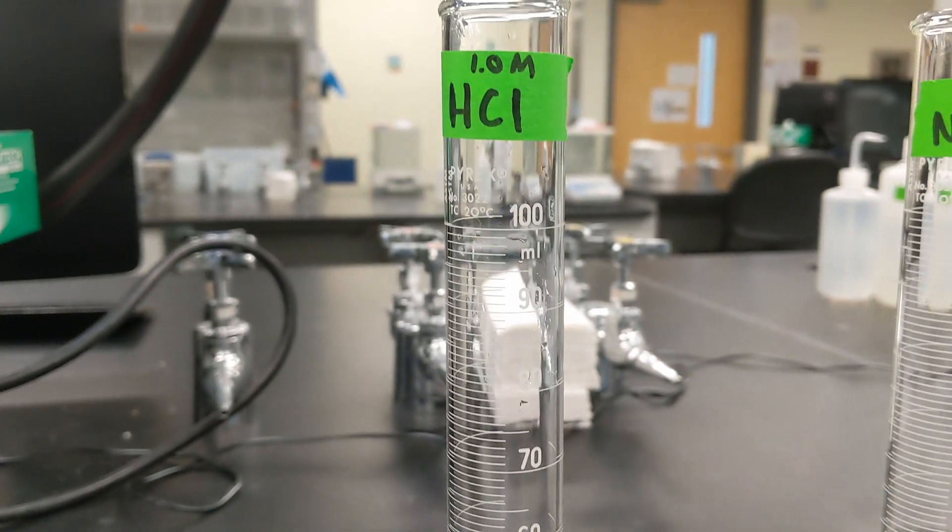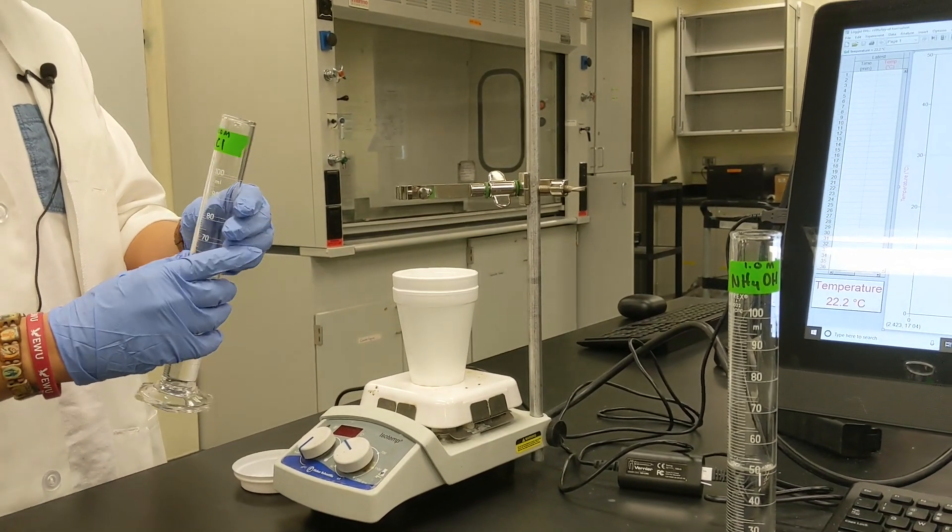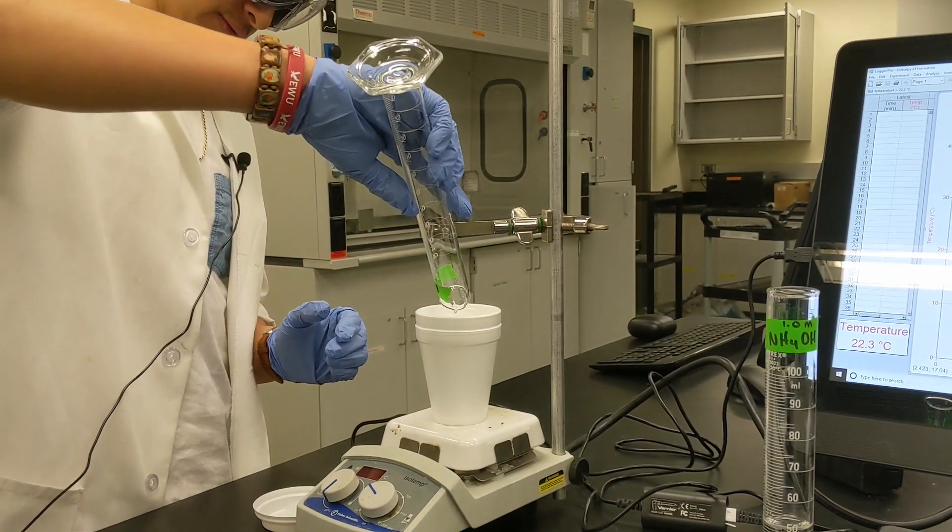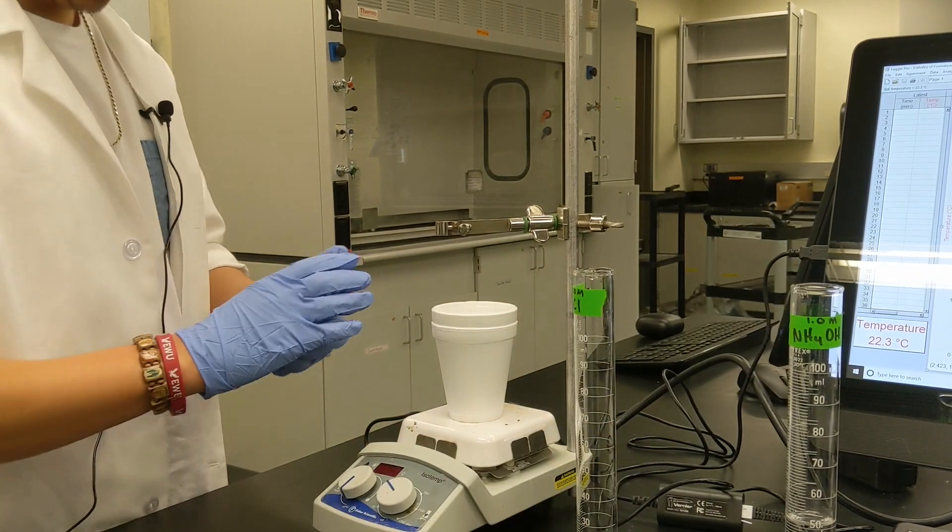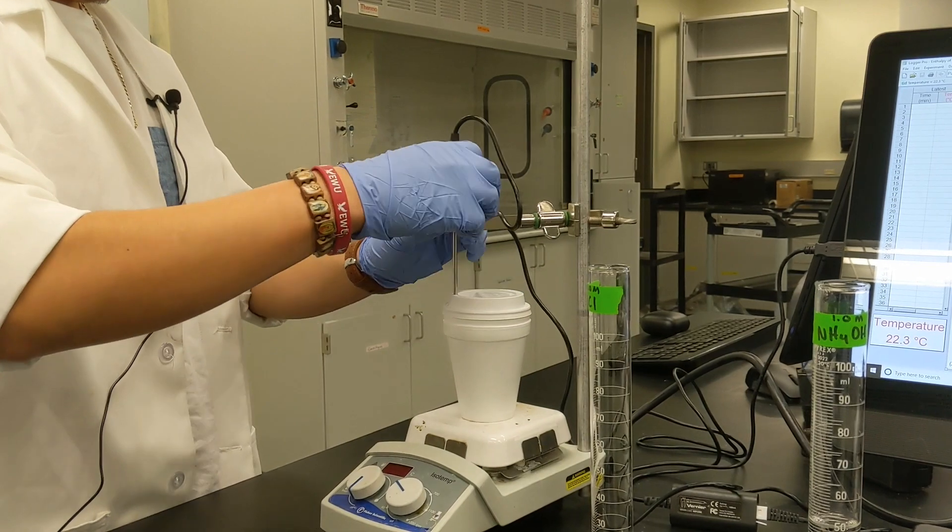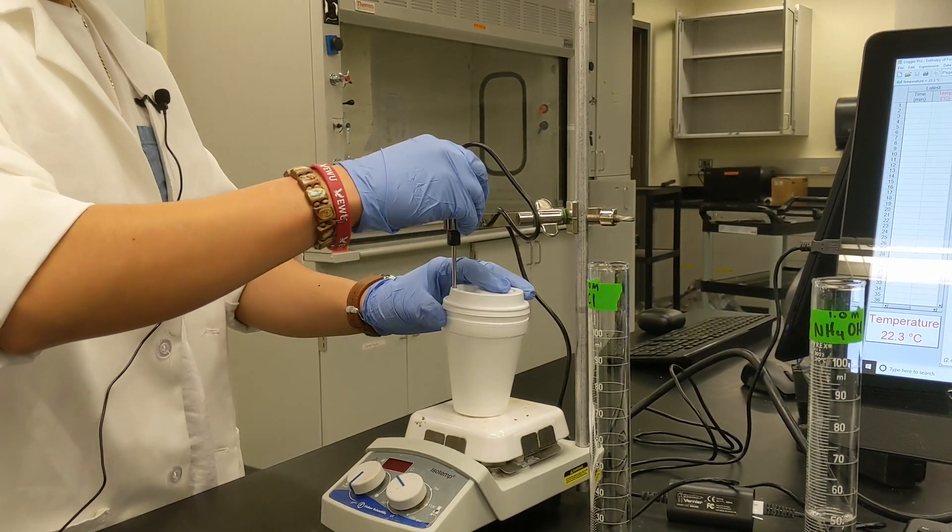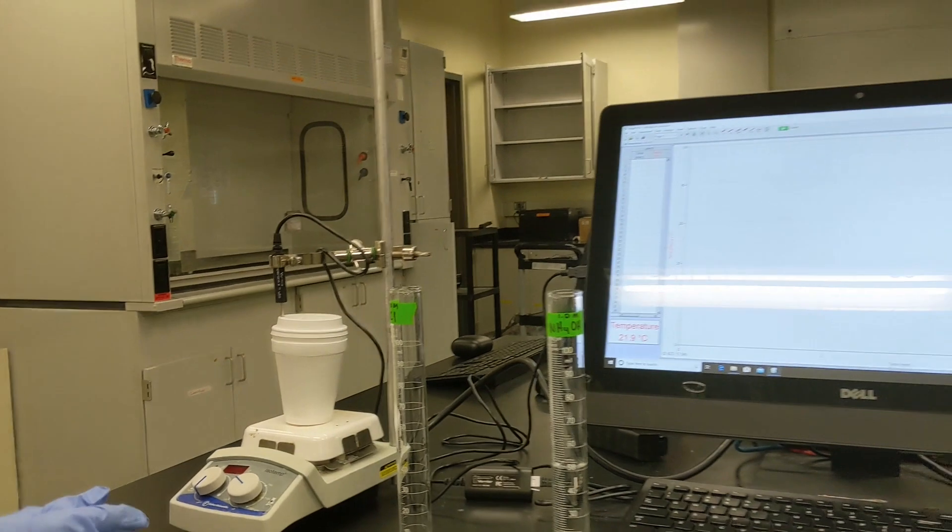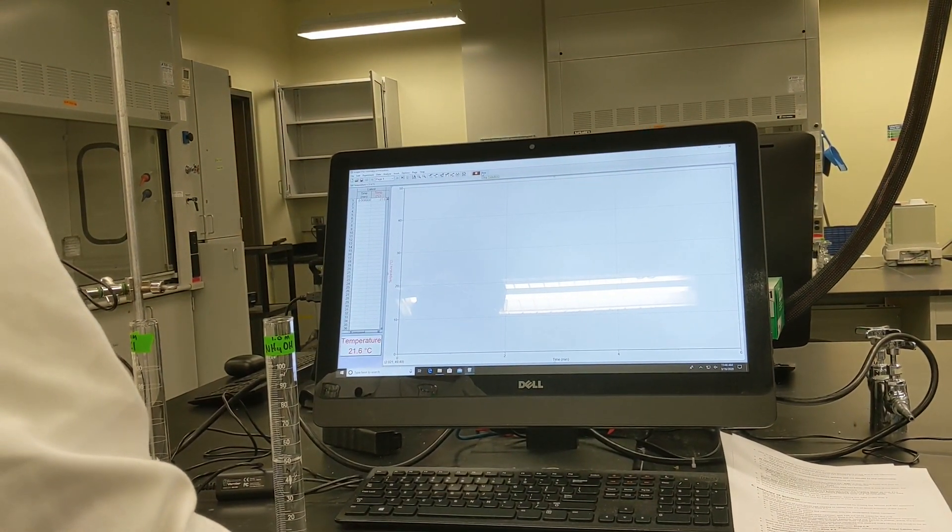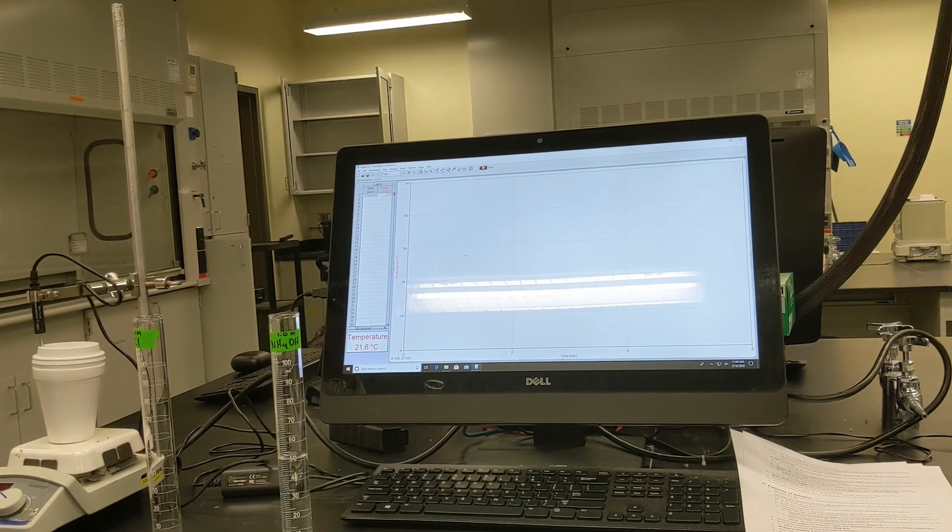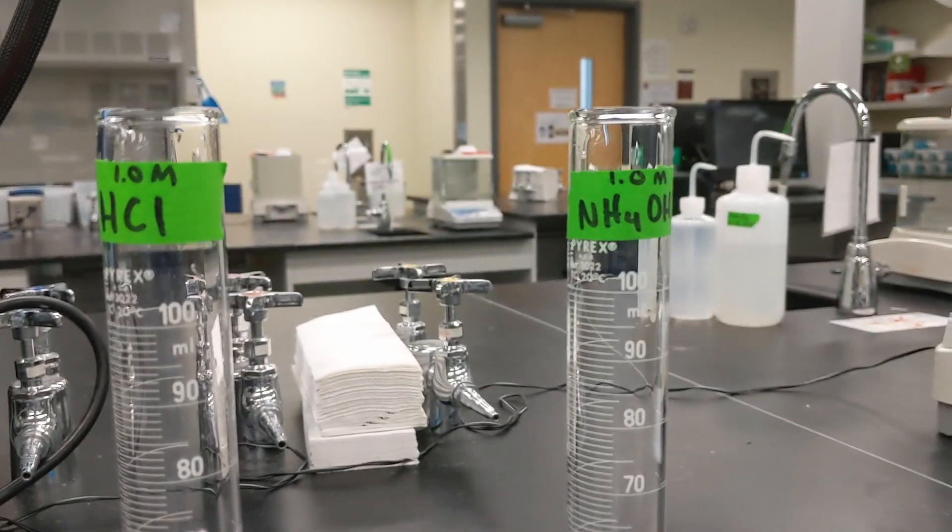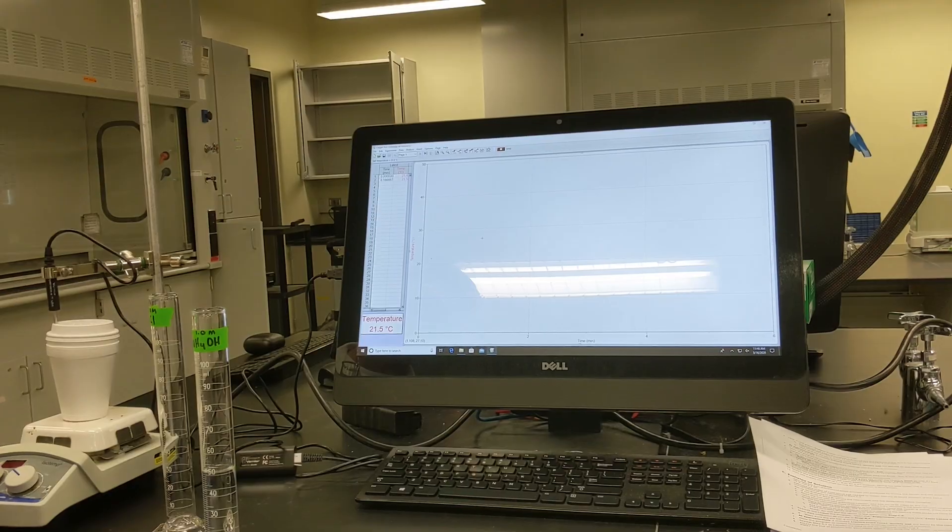So we're going to go ahead and add our 1 molar HCl solution here to the calorimeter. We added all of it. We're going to cap it, add our temperature probe, and then in LoggerPro here, we're going to hit collect.